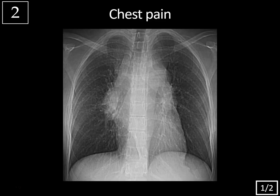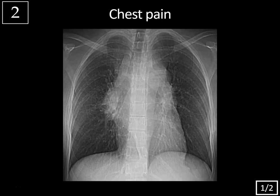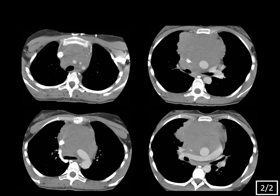Case 2, topogram from a CT chest, history of chest pain. Starting with the topogram, we see that the mediastinum is widened with prominence in the hilar regions and we lose the normal mediastinal contour. Everything seems expanded — you might worry about an aortic dissection or aneurysm, but diffuse lymphadenopathy can also give this appearance.